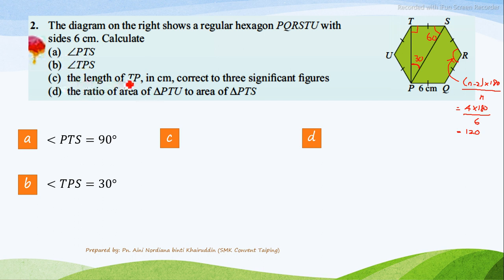Question C, the length of TP in cm correct to 3 significant figures. This is length of TP. So you can use this angle, angle 30. Tangent 30 equals to TS opposite over TP adjacent side of this angle. So TS given 6 cm. Then you can calculate TP, which is 6 divided by tangent 30 equals to 10.4 cm.